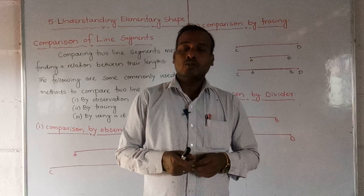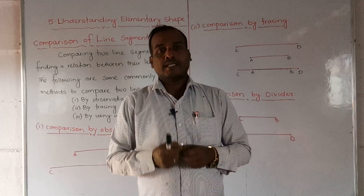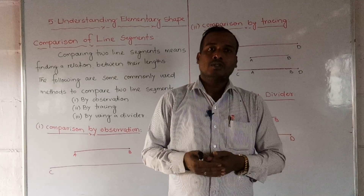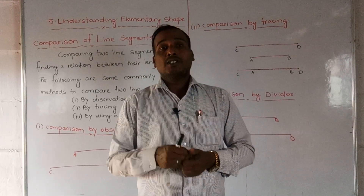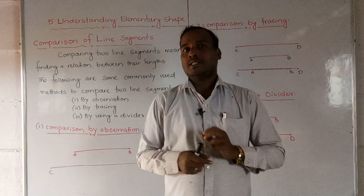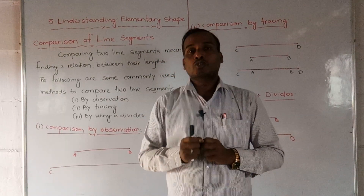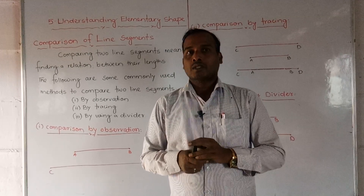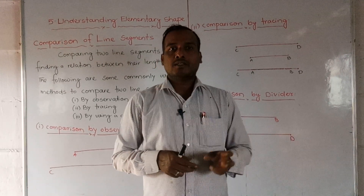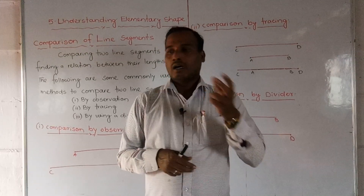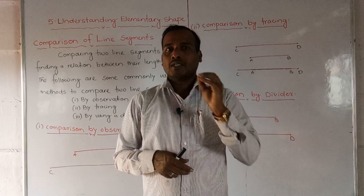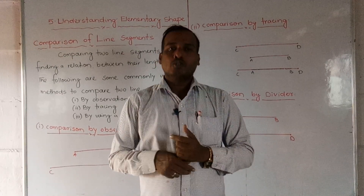By tracing also we can compare — we can keep one line segment on top of another and find out. The third method is by using the divider. The divider is one of the instruments in the geometry box. There are many instruments in the geometry box, like scale, protractor, set squares, divider, and compass.